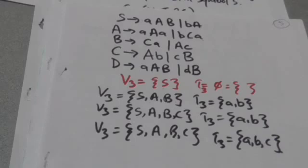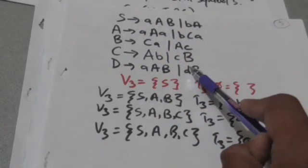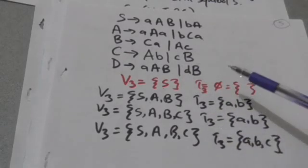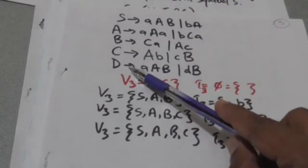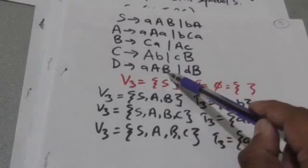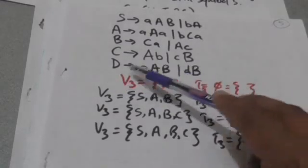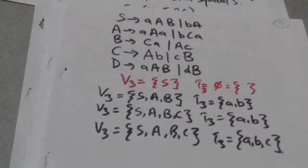We have now seen the productions of all variables present in V3. We cannot add any more variables or terminals to V3 and T3. Variables and terminals not present in V3 and T3 are useless, and productions involving them are also useless and should be removed. So variable D and terminal d are useless — variable D is not present in V3 and terminal d is not present in T3. Productions involving them, that is D derives aAb and D derives dB, are also useless. So remove these productions as well. These are the two steps — step 1 and step 2. First perform step 1, then step 2 to obtain the reduced grammar of a given grammar. Thank you very much.